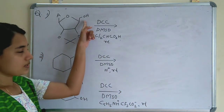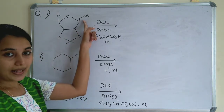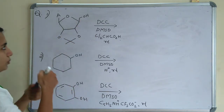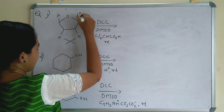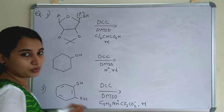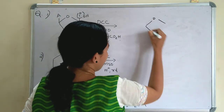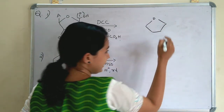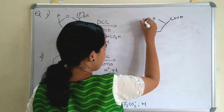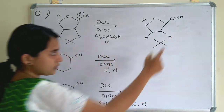First question: an alcohol is given. We just consider whether it is primary or secondary — this is a primary alcohol. Primary alcohol gives an aldehyde, so we have to convert this primary alcohol into an aldehyde. CH₂OH is converted to CHO; the rest of the structure remains as it is. The product is an aldehyde.